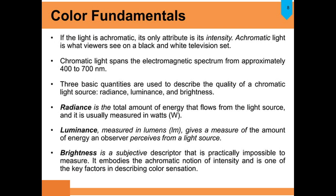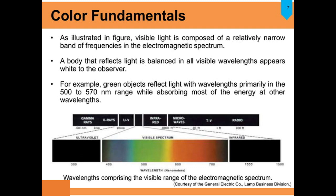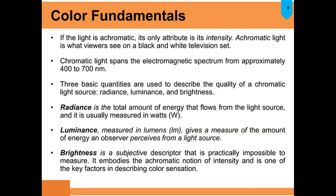Chromatic light spans the electromagnetic spectrum from approximately 400 to 700 nanometers, lying between the ultraviolet and infrared ranges. Three basic quantities are used to describe the quality of a chromatic light source: radiance, luminance, and brightness. Radiance is the total amount of energy that flows from the light source, usually measured in watts. Luminance, measured in lumens, gives the measure of the amount of energy an observer perceives from a light source — light energy coming from the source is radiance, and how much we perceive is luminance.